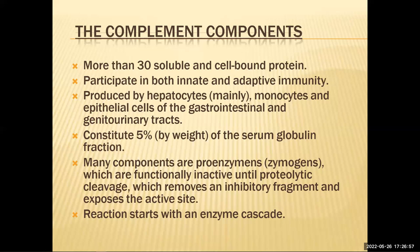As we saw with signal transduction, receptors at the membrane only become activated, causing activation of G-coupled proteins that activate other proteins in a domino-like effect, eventually leading to signal transduction down to the nucleus and ultimately protein formation. These complement proteins participate in both innate and adaptive immunities, and are produced mainly by hepatocytes, monocytes, and epithelial cells of the GI and genitourinary tracts.